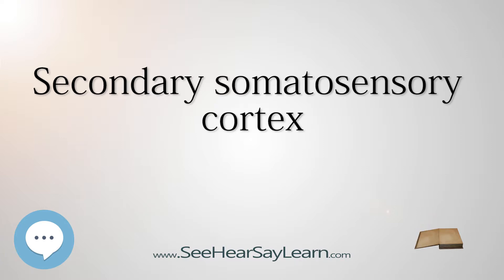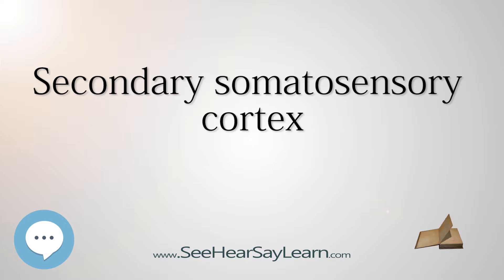In monkeys, apes and hominids, including humans, region S2 is divided into several areas. An area at the entrance to the lateral sulcus, adjoining the primary somatosensory cortex S1, is called the parietal ventral area (PV).